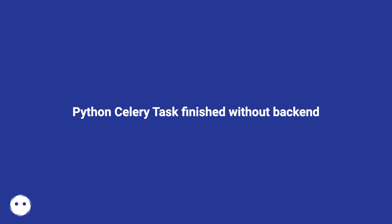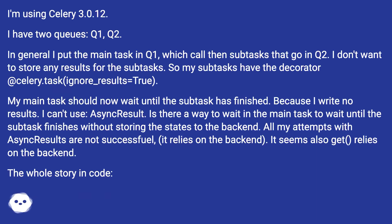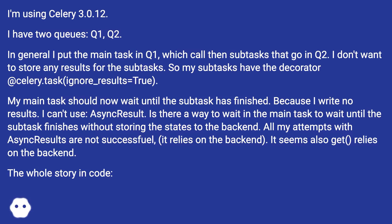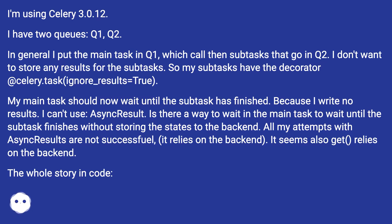Python Celery task finished without backend. I'm using Celery 3.0.12. I have two queues, Q1 and Q2. In general, I put the main task in Q1, which calls subtasks that go in Q2. I don't want to store any results for the subtasks, so my subtasks have the decorator @celery.task with ignore_result=True. My main task should wait until the subtask has finished, but since I write no results, I can't use AsyncResult. Is there a way to wait in the main task until the subtask finishes without storing states to the backend? All my attempts with AsyncResult are unsuccessful — it relies on the backend.